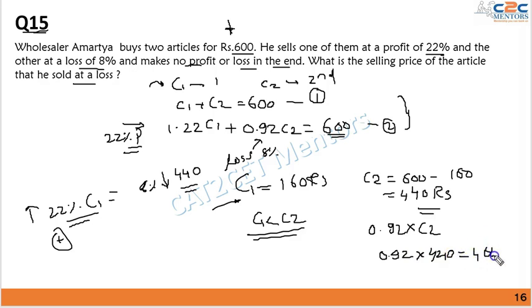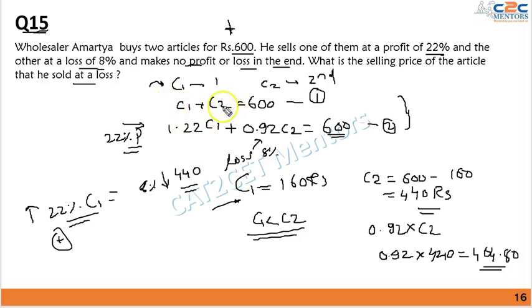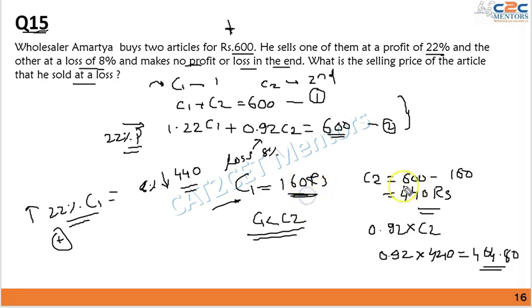The selling price of article 2 (sold at a loss) = 0.92 × 440 = 404.80 rupees. The assumption of which article had profit and which had loss was just an assumption; the calculations confirmed that the loss was on article number two.